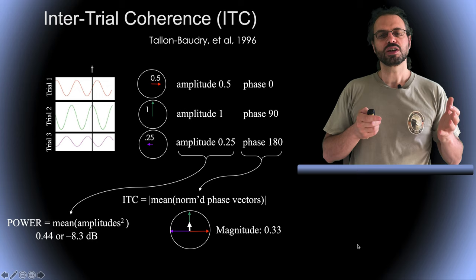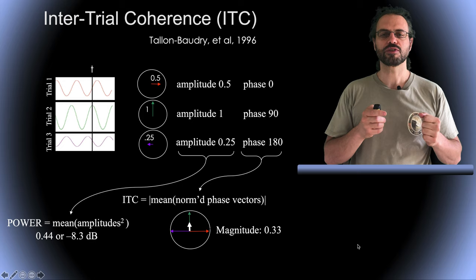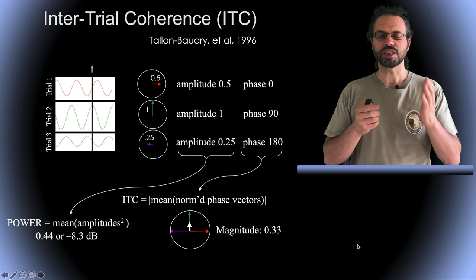This is what is done here. This is the average vector in white and its length or magnitude tells us whether the different trials have the same phase and its orientation indicates the dominant phase.